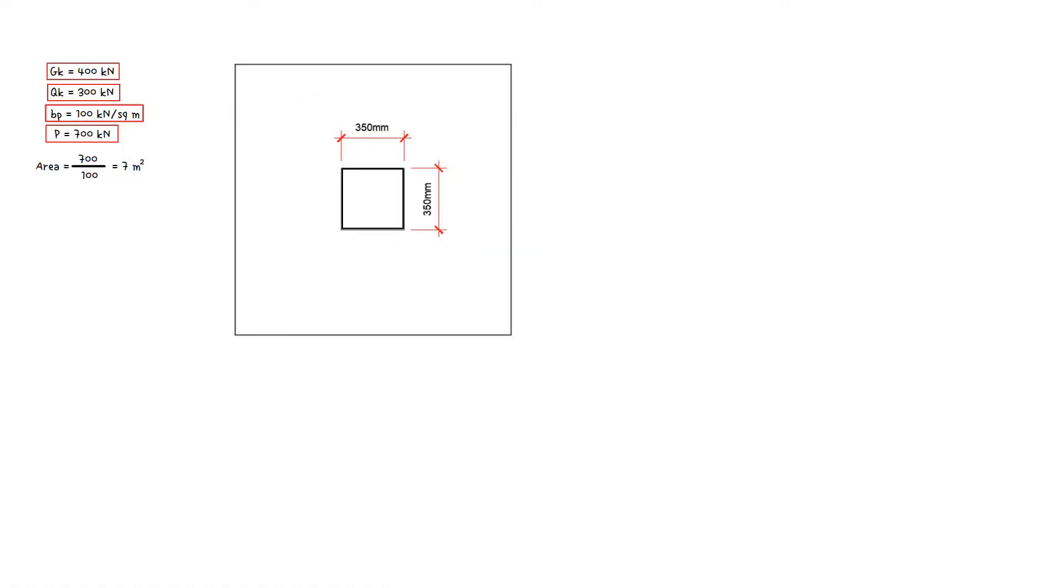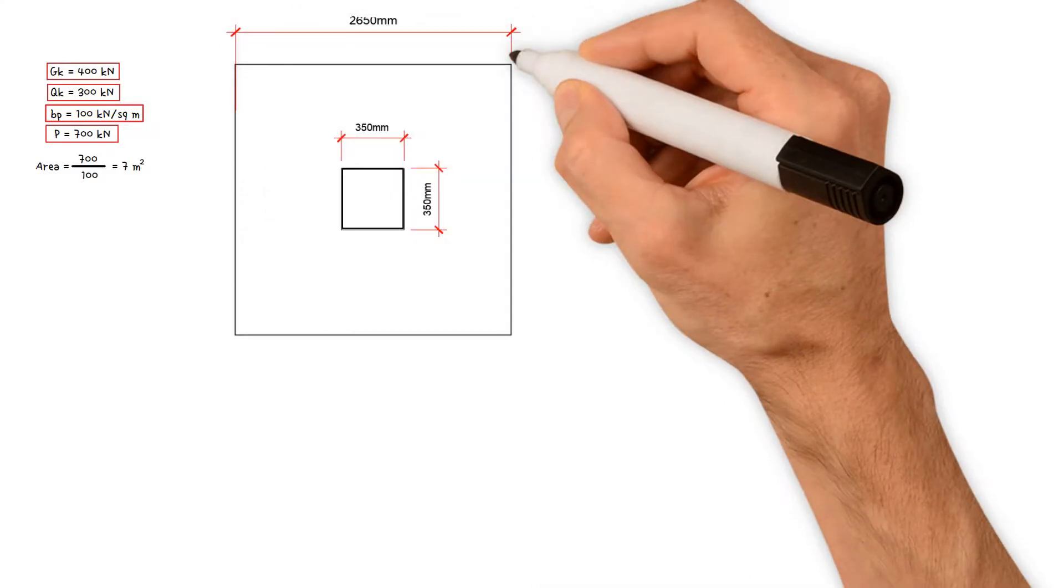As a result, the width of the pad equals the square root of the area, which equals the square root of 7 meters squared. This gives us a value of 2.65 meters.